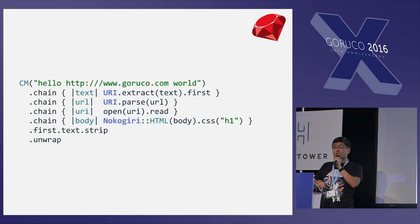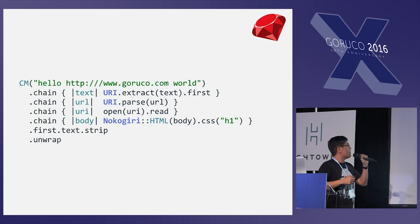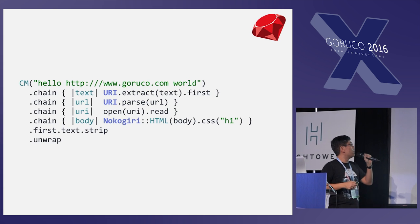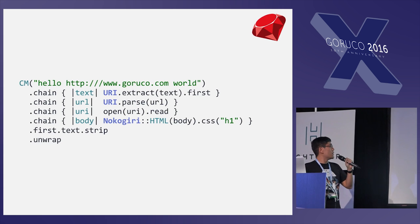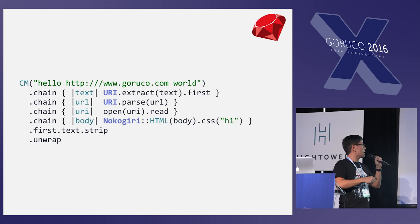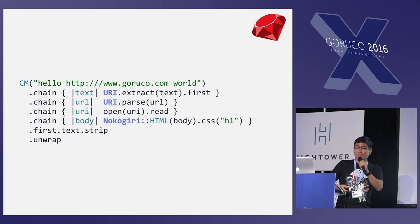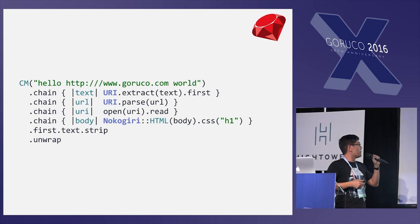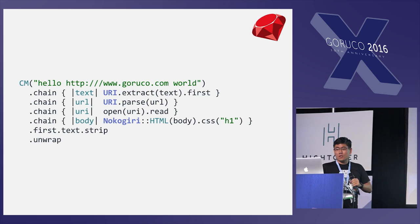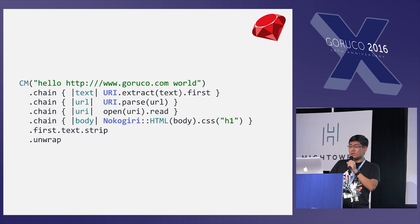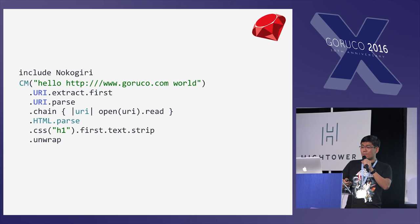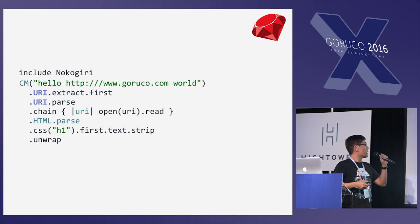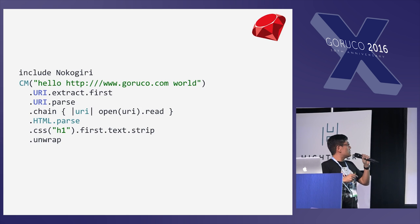But we can actually create a chain like this. We start with, in this case, a string. I wrap it in this CM function that I created, and it creates a chain that I can start linking methods together. If the object that returns responds to the method, I can just type dot dot dot as we would in Ruby. Otherwise, I can chain together a block. In the new version I just posted today, I can dot directly to the URI module and call the extract method, then call first on the resulting string, and keep chaining methods together.